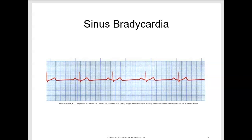When taking a pulse or apical pulse, assess whether the patient is symptomatic if that heart rate comes back under 60. The patient may be asymptomatic. Signs and symptoms to look for include syncope, dizziness, weakness, confusion, hypotension, diaphoresis, shortness of breath, and chest pain.